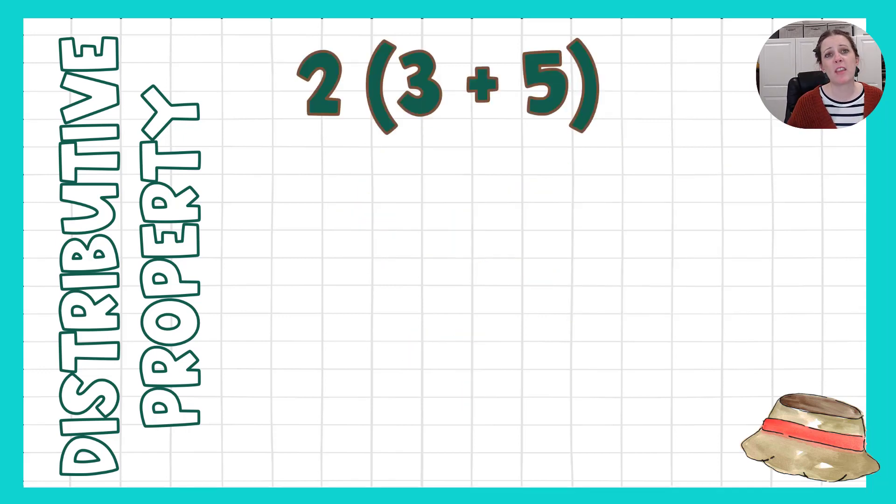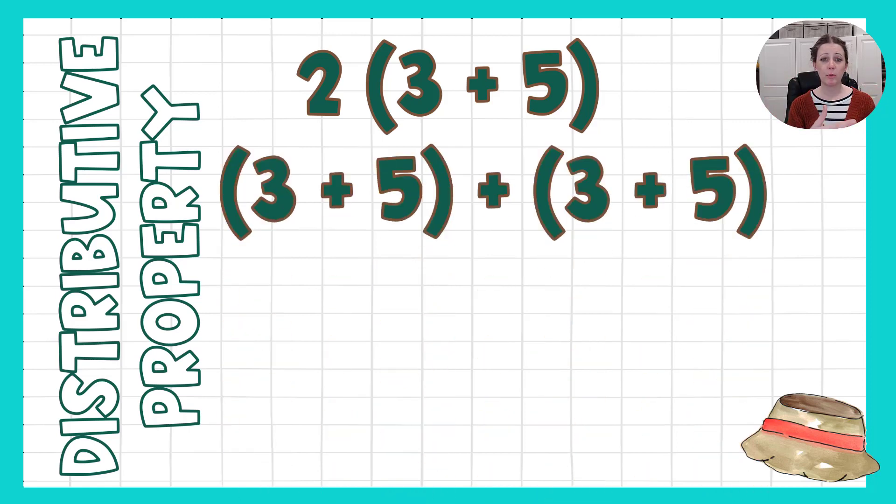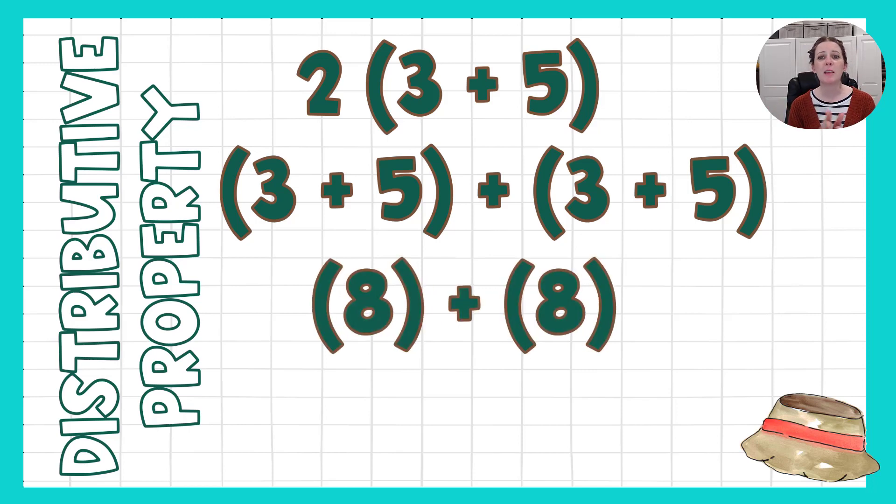Another way that we could think about this is whatever's in parentheses, in this case 3 plus 5, we have 2 of those. So we could rewrite this, 3 plus 5, and 3 plus 5. Well 3 plus 5 is 8, and again it's 8, so that is the same as 8 plus 8, which is 16. So same answer, just a different strategy, a different way of getting there.